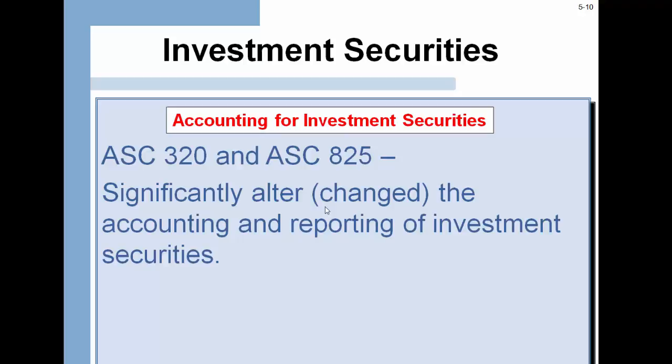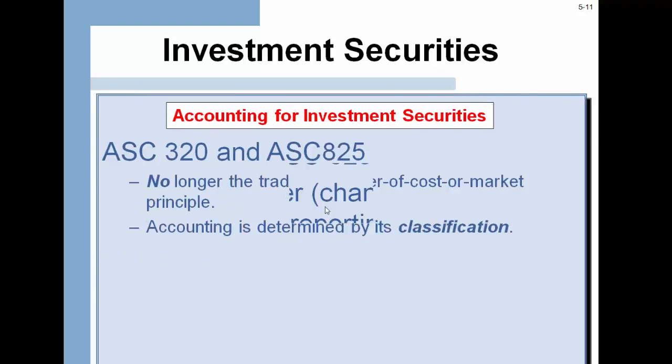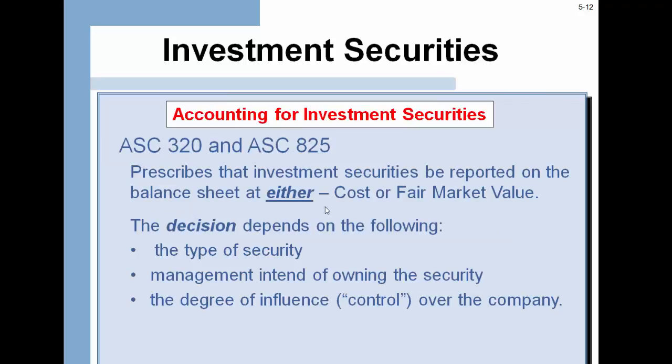These standards changed how we account for investment securities. You no longer put them on your books at lower of cost or market. Accounting is determined by their classification: trading securities, marketable securities, or held to maturity. The decision depends on three things: the type of security, what management intends to do when owning the security, and the degree of control and influence.